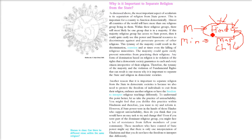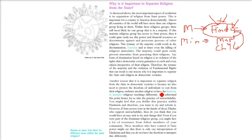This is why it is very important to separate religion from the state. Another reason is that in democratic societies, we also need to protect the freedom of individuals to exit from their religion, embrace another religion, or have the freedom to interpret their own religion in their own terms. So if someone wants to change their religion, adopt another religion, or interpret their religion in their own way, this is also possible.